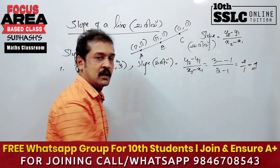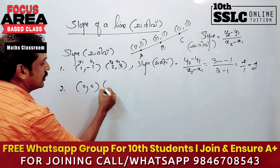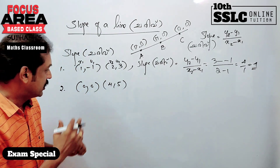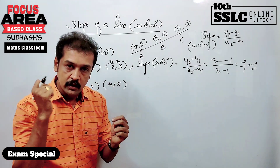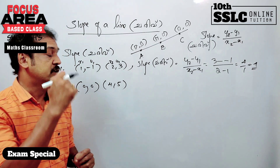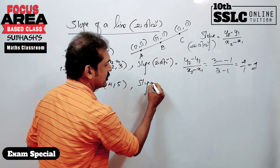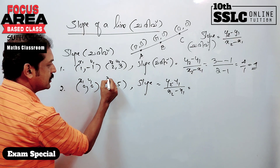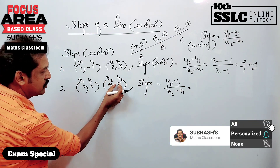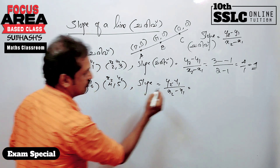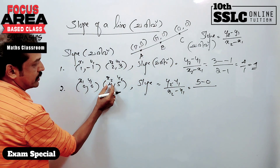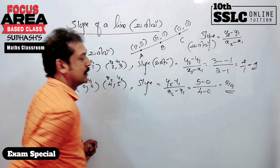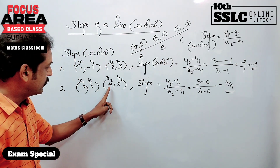Number two: the points are (0, 0) and (4, 5). Find the slope of the line joining these points. The slope is equal to y2 minus y1 by x2 minus x1. That is: 5 minus 0 on the numerator, and 4 minus 0 on the denominator.